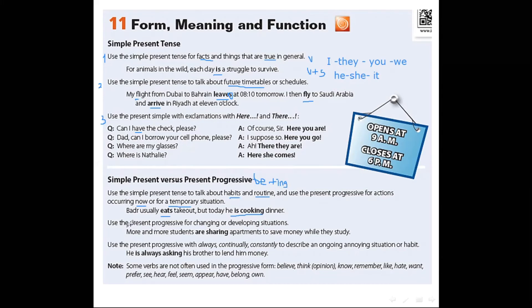Do you get it? We also use the present progressive for changing or developing situations. Like what? More and more students are sharing apartments to save money while they study. Here we use present progressive because it's a changing situation. And we use are because the subject is plural students. We also use the present progressive with always, continually and constantly to describe an ongoing annoying situation or habit.